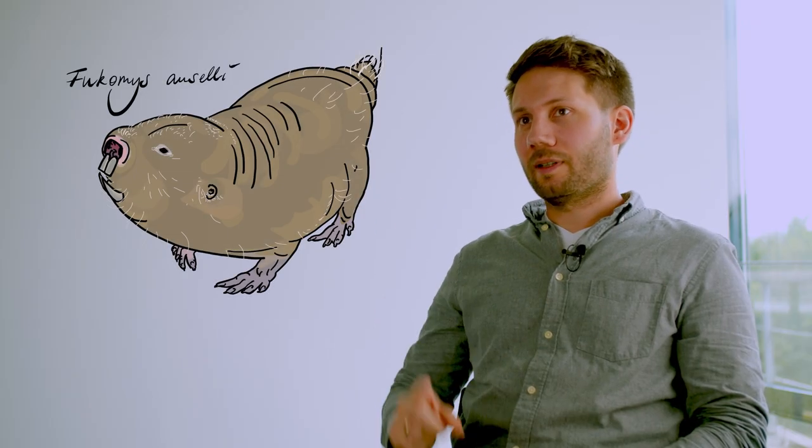We are trying to understand how animals perceive the Earth's magnetic field and use it for orientation by studying a mammal with an inbuilt magnetic compass, the mole rat, a hamster-sized African rodent that lives underground.